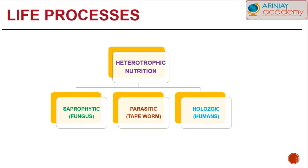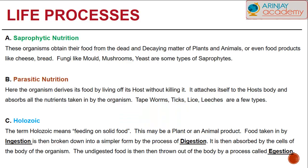Holozoic nutrition refers to higher animals like humans that rely on readily available food. Saprophytic organisms rely on the dead and decaying matter of plants and animals. Food products like cheese and bread are examples — fungi that grows on these decayed items includes different kinds like mold, mushrooms, and yeast, which are some types of saprophytes.